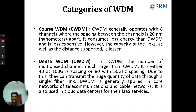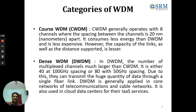WDM is classified into two main categories: CWDM (Coarse Wavelength Division Multiplexing) and DWDM (Dense Wavelength Division Multiplexing). Speaking about CWDM, it generally operates with eight channels, where the spacing between channels is 20 nanometers apart.